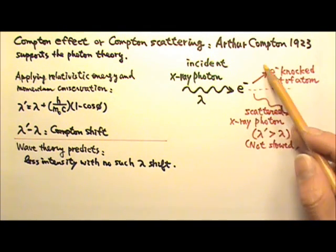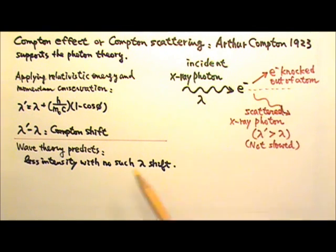When that wave loses energy to the electron, its intensity decreases, but its wavelength does not change. So the wave theory fails at explaining the Compton effect.